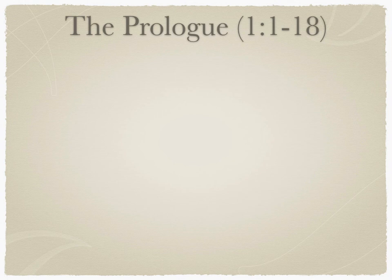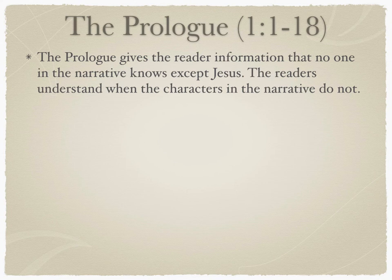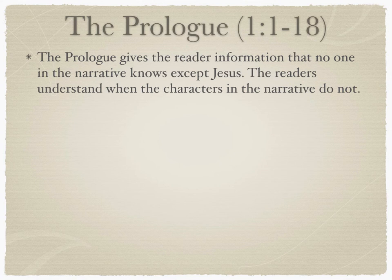Let's get into each one of these main characteristics and look first at the prologue of the Gospel — chapter 1, verses 1 through 18. It sets this Gospel apart from all the others. The prologue gives the reader special information that no one in the narrative of the Gospel knows except for Jesus. Misunderstanding is a trope in the Gospel of John — everybody misunderstands, except Jesus, the writer, and those who read it.